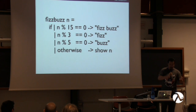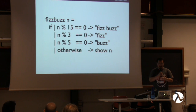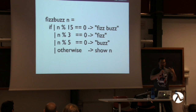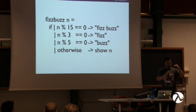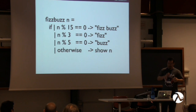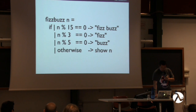Unlike Haskell, F#, and other languages, Elm doesn't support guards yet. So when you want another layer of conditional — for instance, if the input name is 'yen' and then some other condition — you can't express that using guards. You use the multi-way if statement instead.